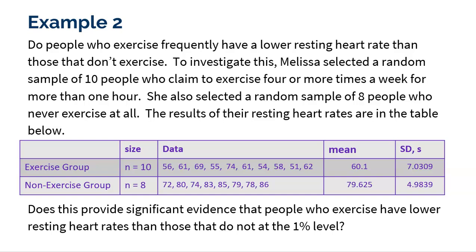And then for a group of eight random people who do not exercise regularly, we have their data as well. We have their resting heart rates, and then we have the mean for that group and the standard deviation. So does this provide significant evidence that people who exercise have lower resting heart rates than those who do not at the 1% significance level?